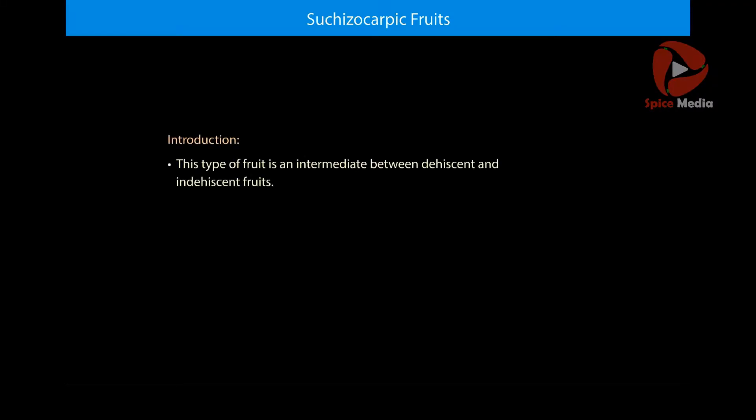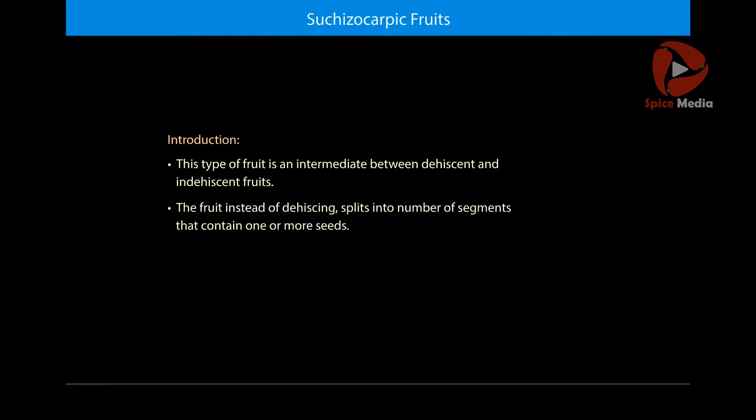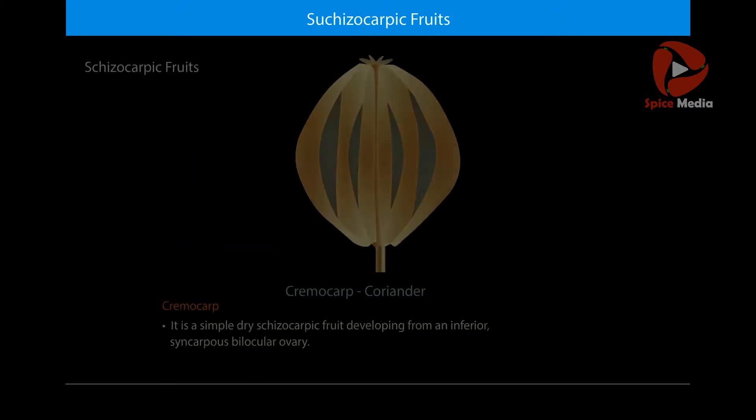Schizocarpic fruits are intermediate between dehiscent and indehiscent fruits. The fruit, instead of dehiscing, splits into segments.